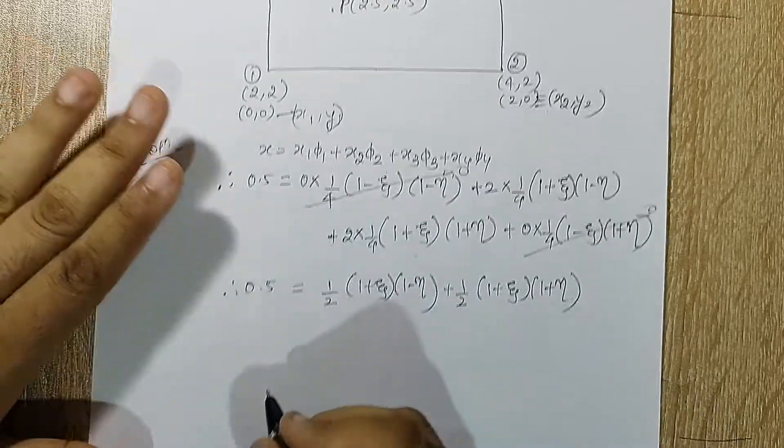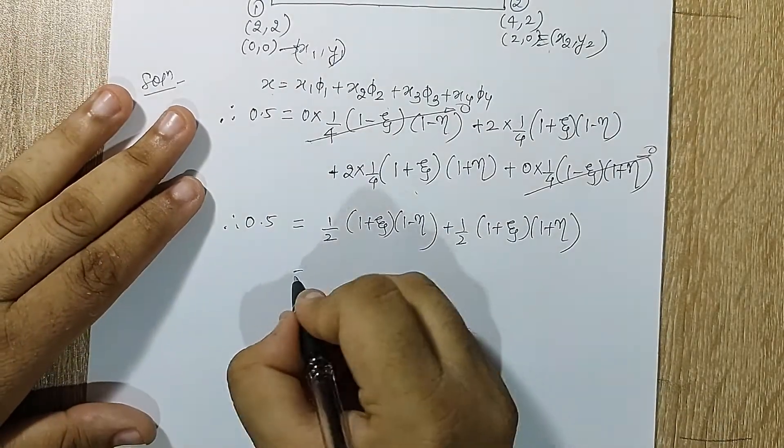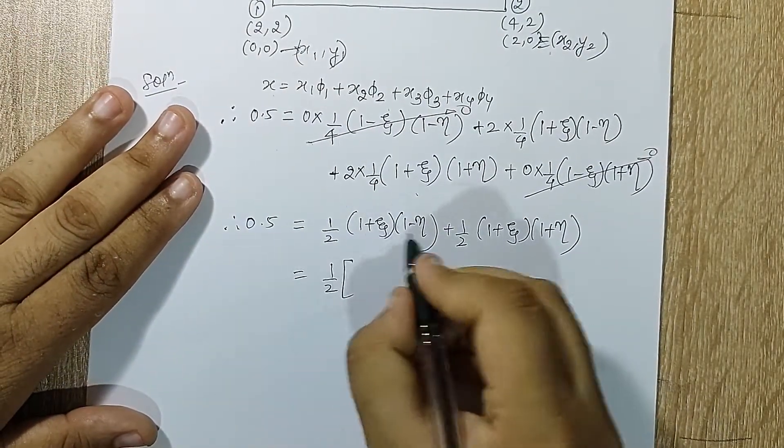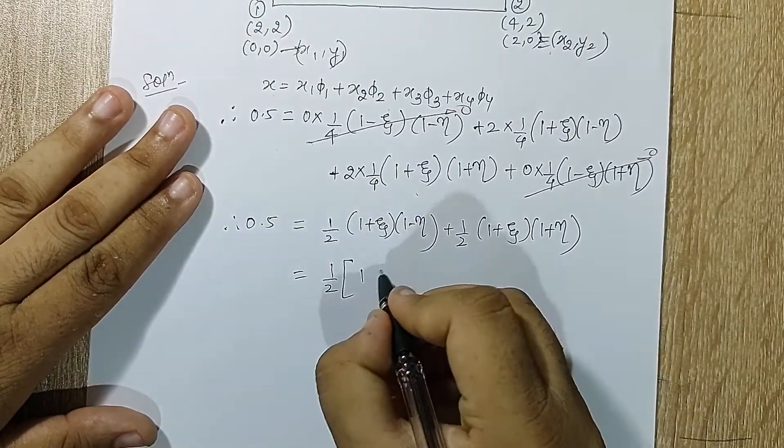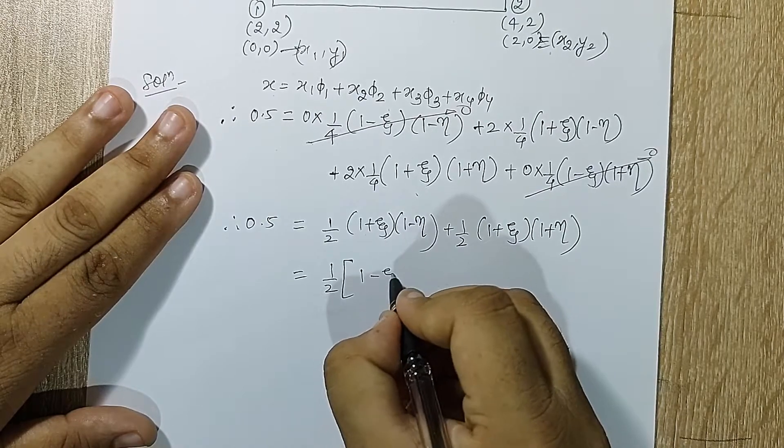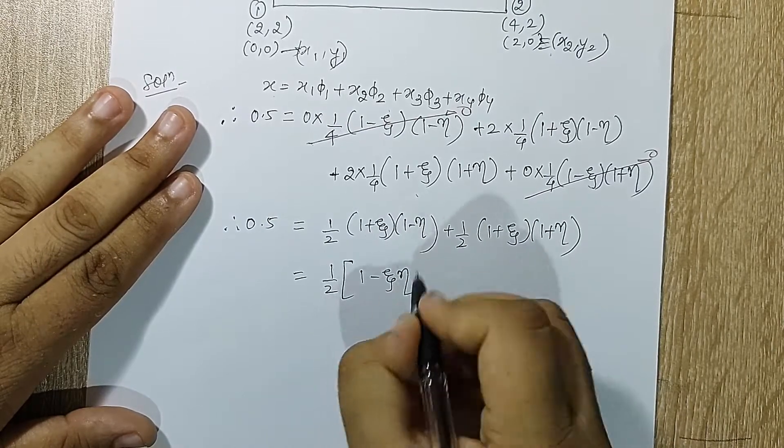I will open up the brackets. This is a simple mathematical calculation. Expanding: I have (1/2)(1+ζ)(1−η) + (1/2)(1+ζ)(1+η).